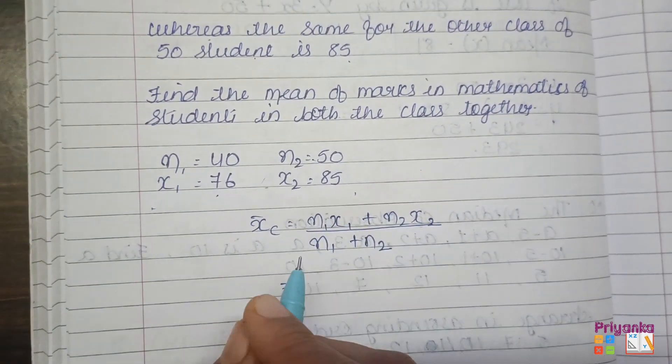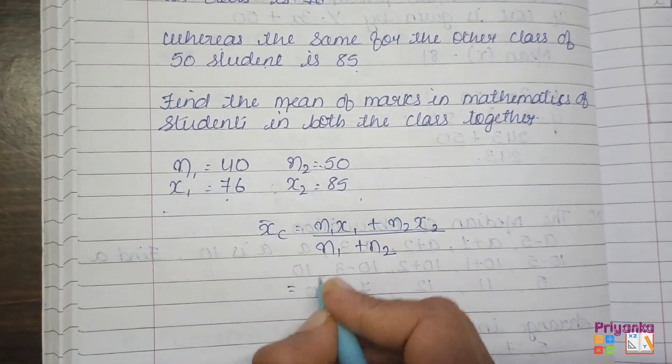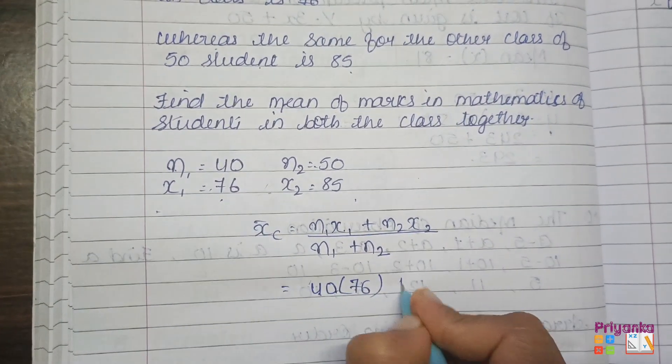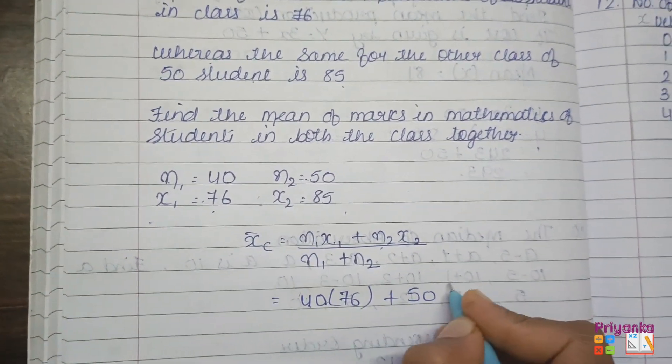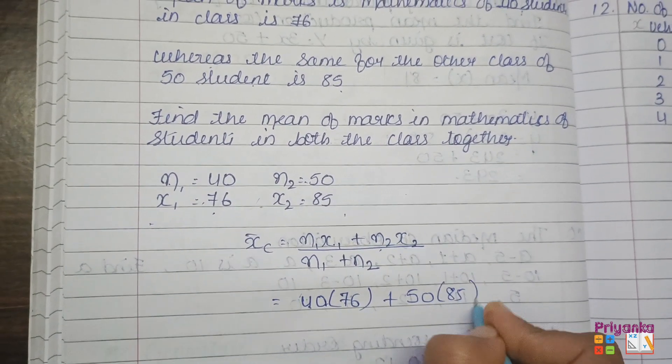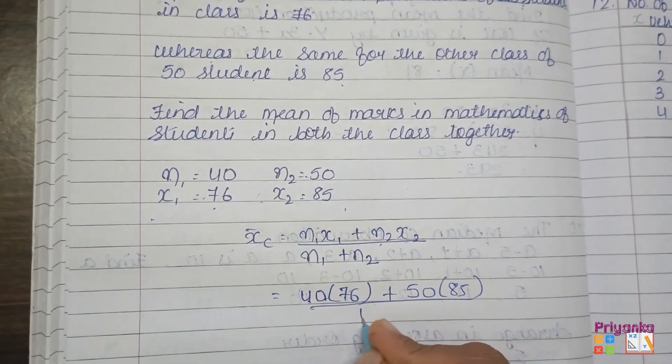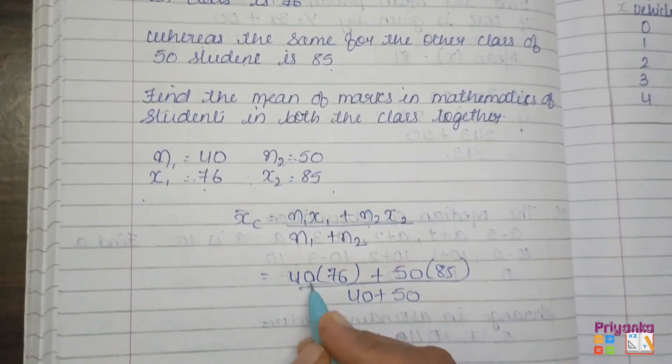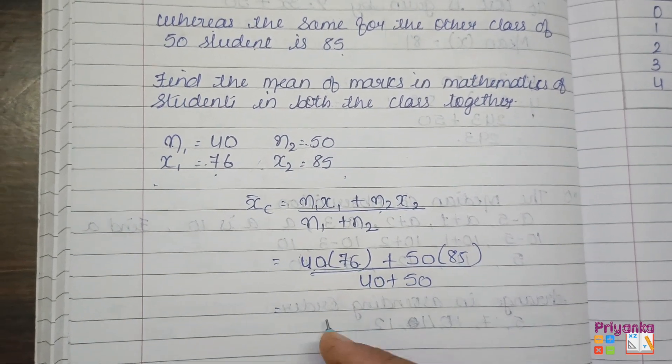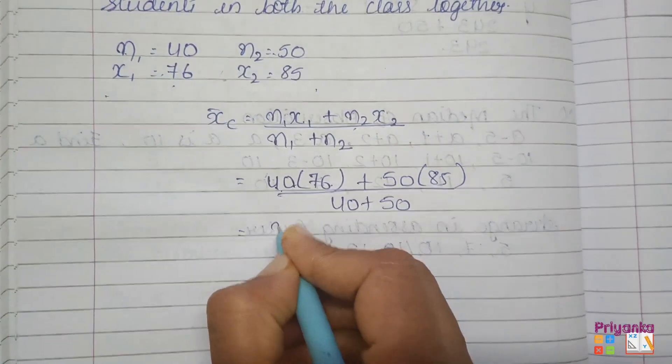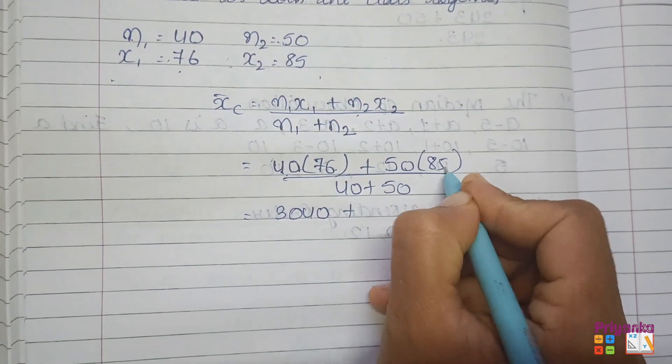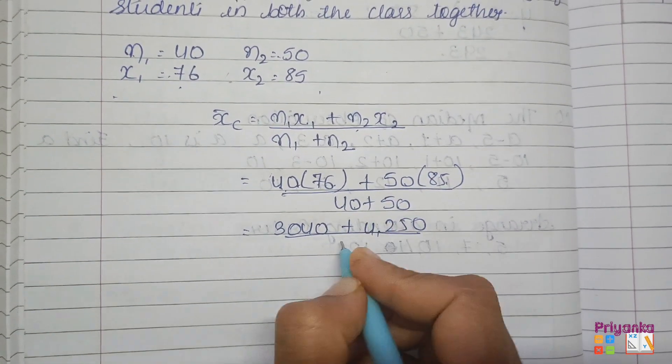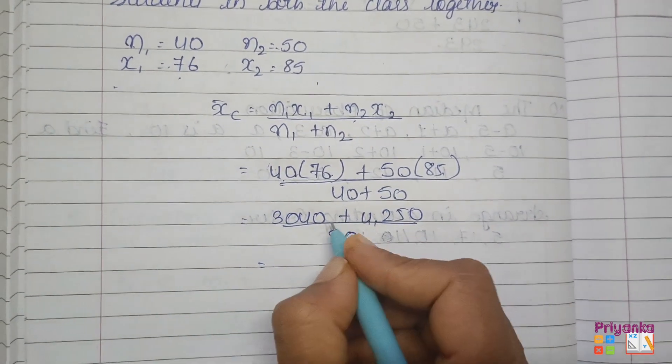Now we will just keep the value in the formula. n1 is 40, mean 1 is 76 which is going to be multiplied. n2 is 50, mean 2 is 85, and n1 is 40 plus n2 is 50. First get multiplied. 40 into 76, you will get 3040.